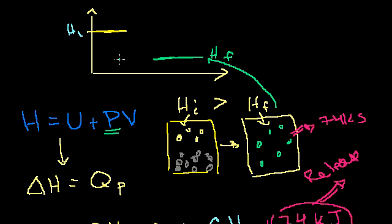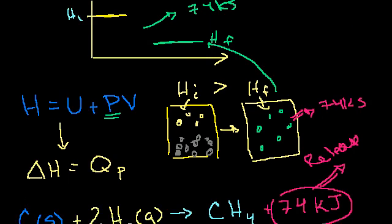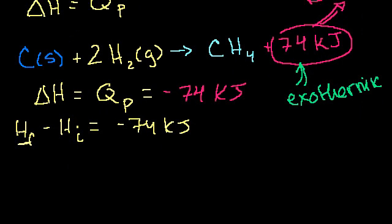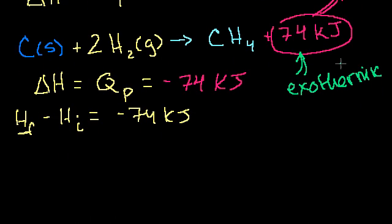And that change in internal energy is really a conversion from some potential energy up here into the heat that's released. So there was some heat that was released, 74 kilojoules. And so our internal energy dropped. And what all of this does is it gives us a framework so that if we know how much heat it takes to form or not form certain products, then we can predict how much heat will either be released or how much heat will be absorbed by different reactions.